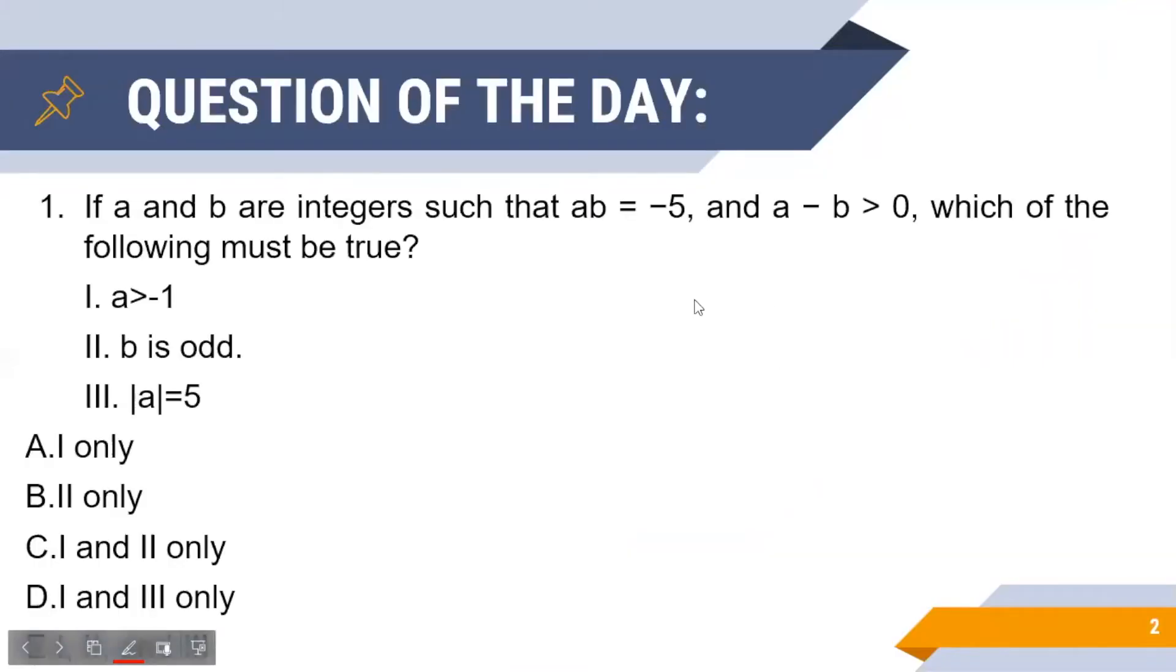As you can see, this is a multiple choice question with a single correct answer. In this question, a and b are two integers such that ab is equal to minus five, and also a minus b is always greater than zero. Next, we are asked to investigate which of the options one, two, and three hold true for all values of a and b.